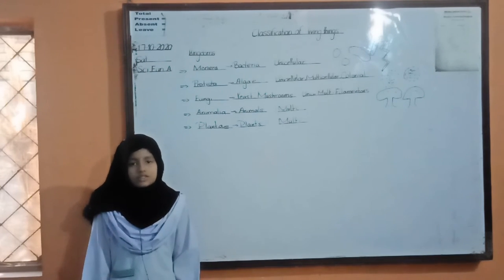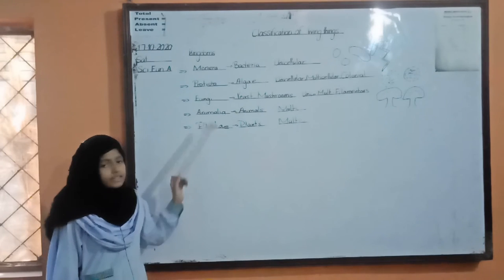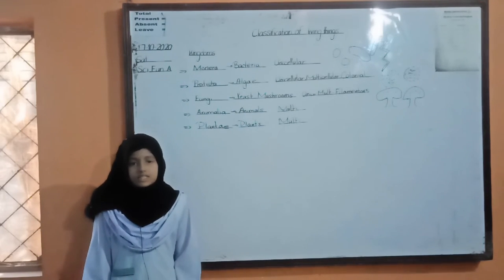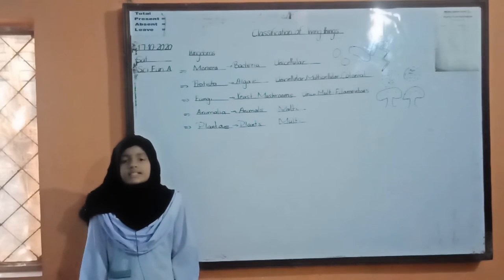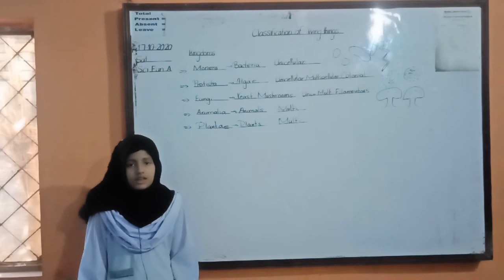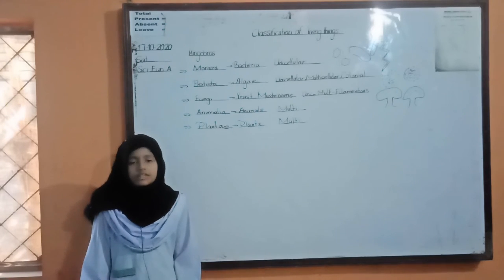Now I am going to tell you about fourth kingdom, Kingdom Animalia. Kingdom Animalia consists of animals. Animals have two main groups, vertebrates and invertebrates. Vertebrate animals are those animals which have backbone and invertebrate animals do not have backbone.